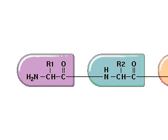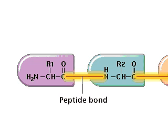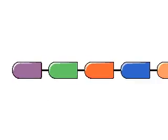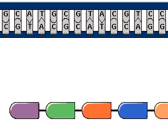Within a protein, amino acids are linked to each other by a peptide bond. The sequence of amino acids in a protein is coded in the sequence of bases in DNA.